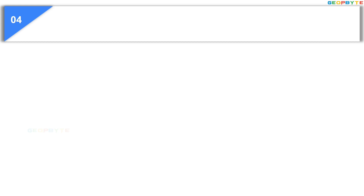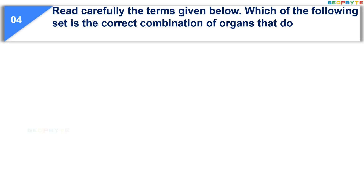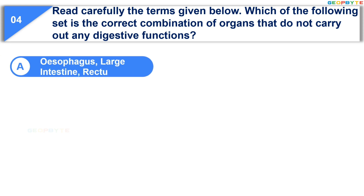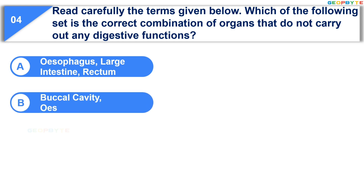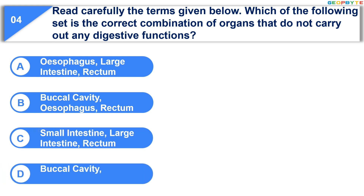Moving to the fourth question: read carefully the terms given below. Which of the following is the correct combination of organs that do not carry out any digestive functions? Option A: esophagus, large intestine, rectum; Option B: buccal cavity, esophagus, rectum; Option C: small intestine, large intestine, rectum; Option D: buccal cavity, rectum, large intestine.